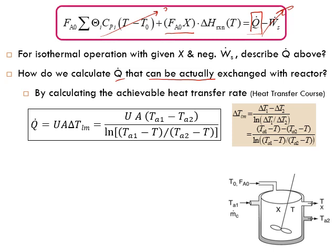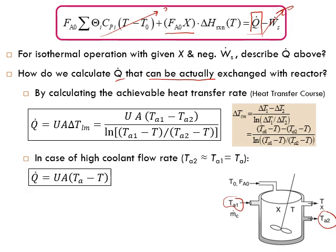In the case of a high coolant flow rate, TA1 will essentially equal TA2 — the coolant exit temperature almost equals the coolant inlet temperature — giving us one coolant temperature TA. Therefore, the equation reduces to: Q̇ = U * A * (TA − T), which is always the outside temperature minus the inside temperature.